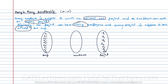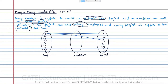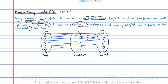Every employee is supposed to work on at least one project. For example, employee e1 is working on project p1, and also on project p3. Employee e2 is working on p1, e3 on p2, e4 on p3, e5 on p1, e6 on p4, e7 on p7, e8 on p4, and e9 on p7.